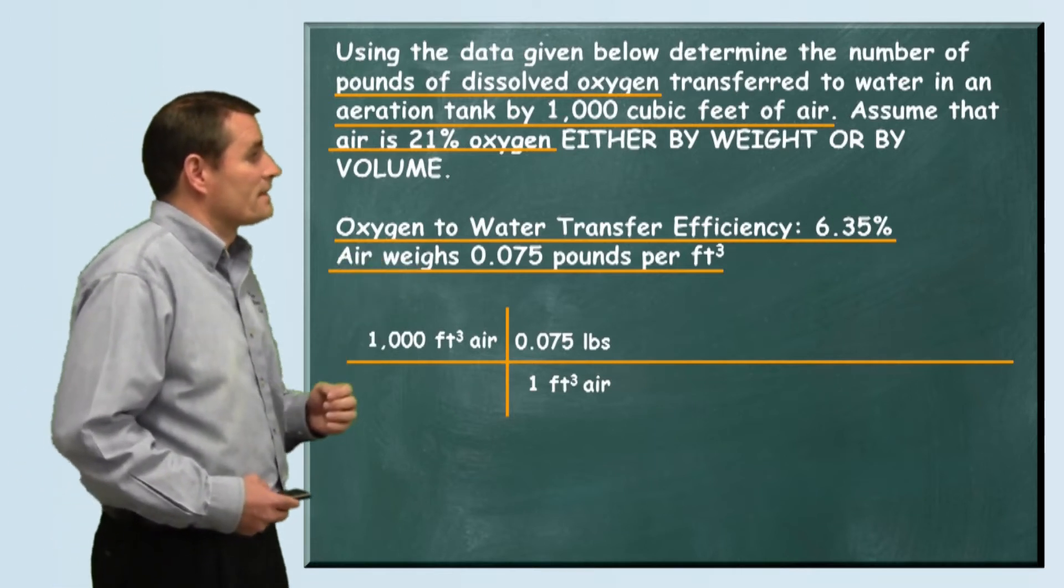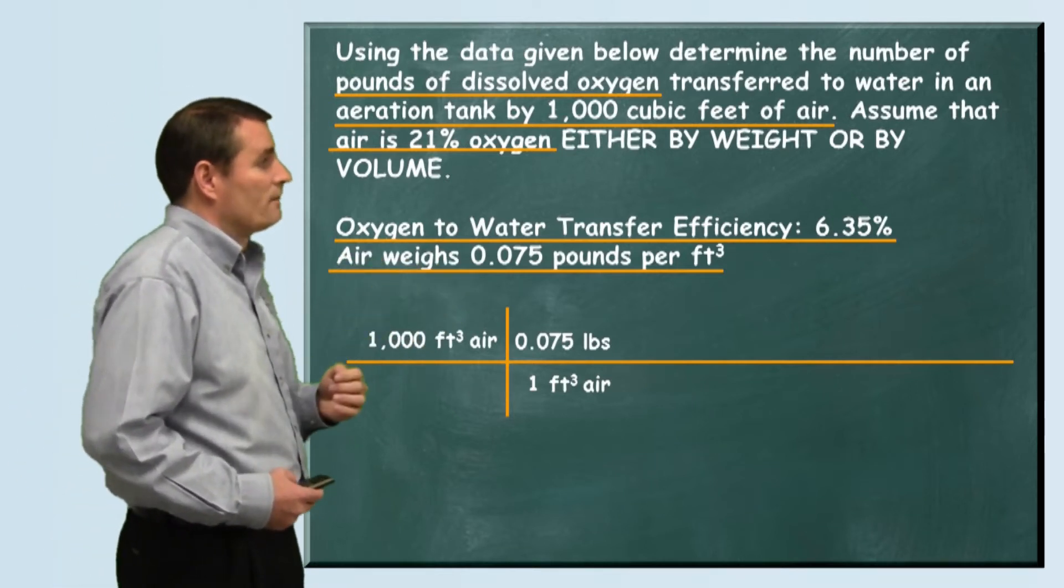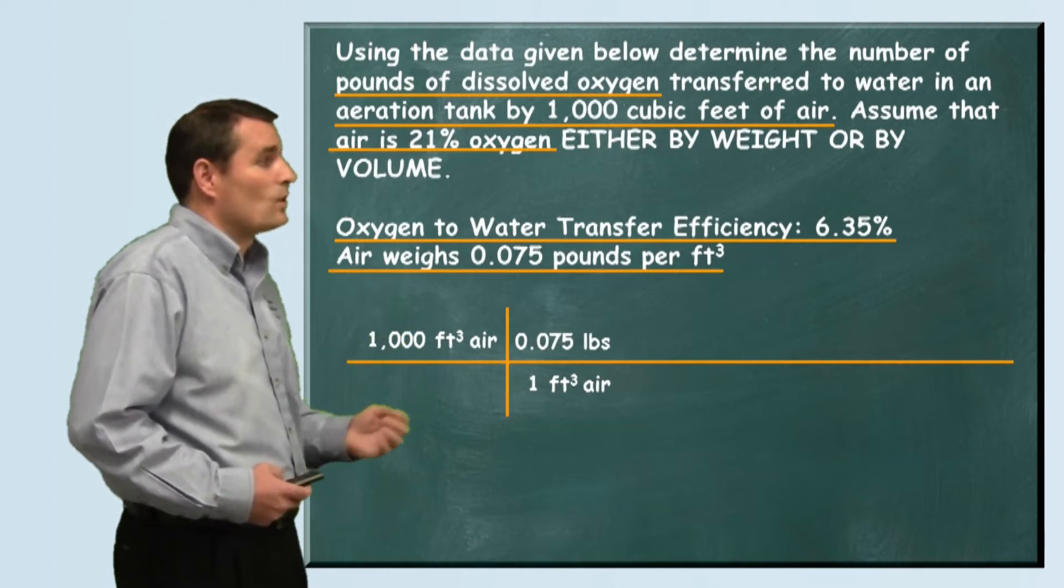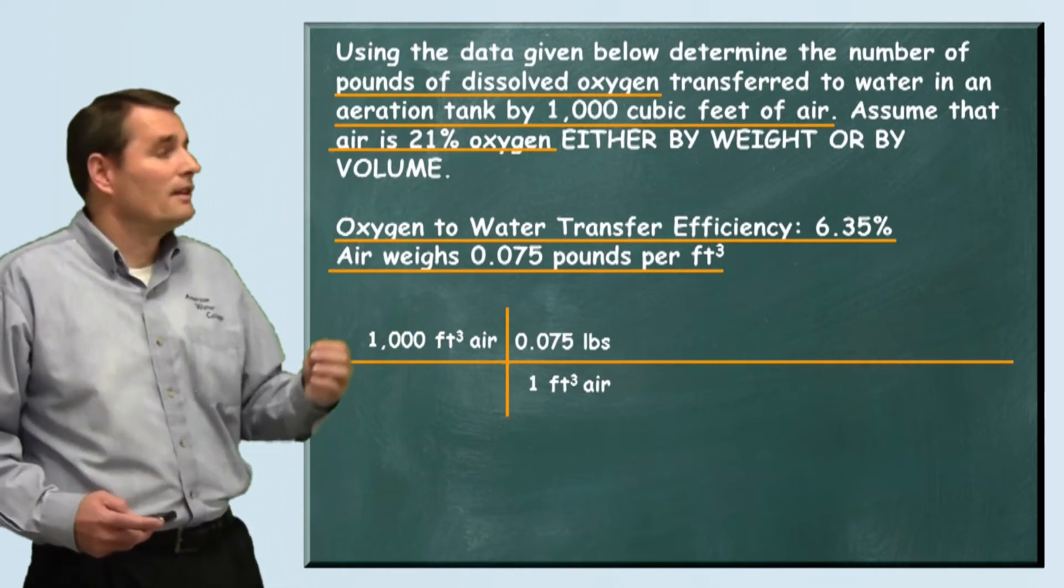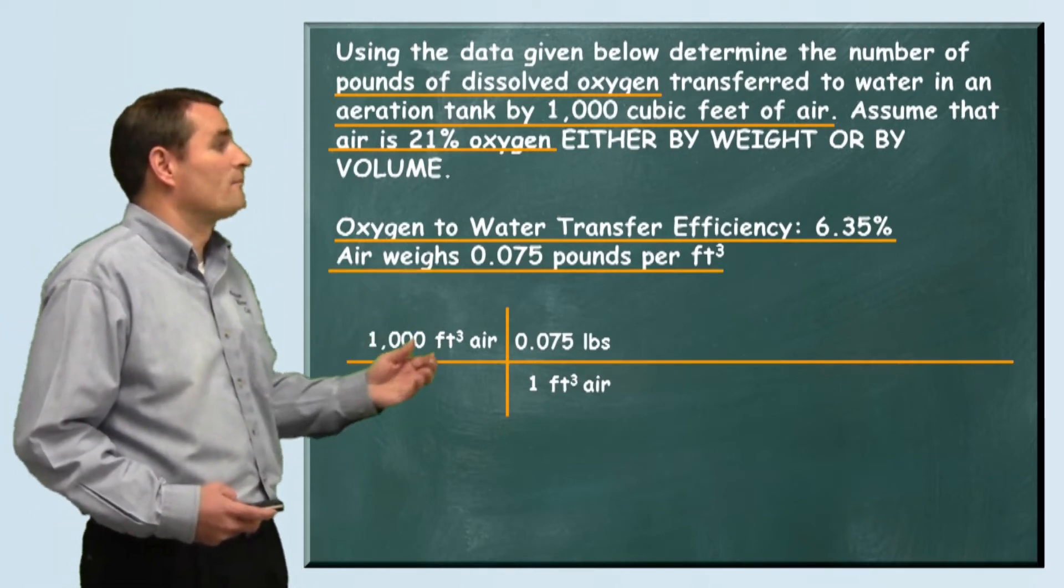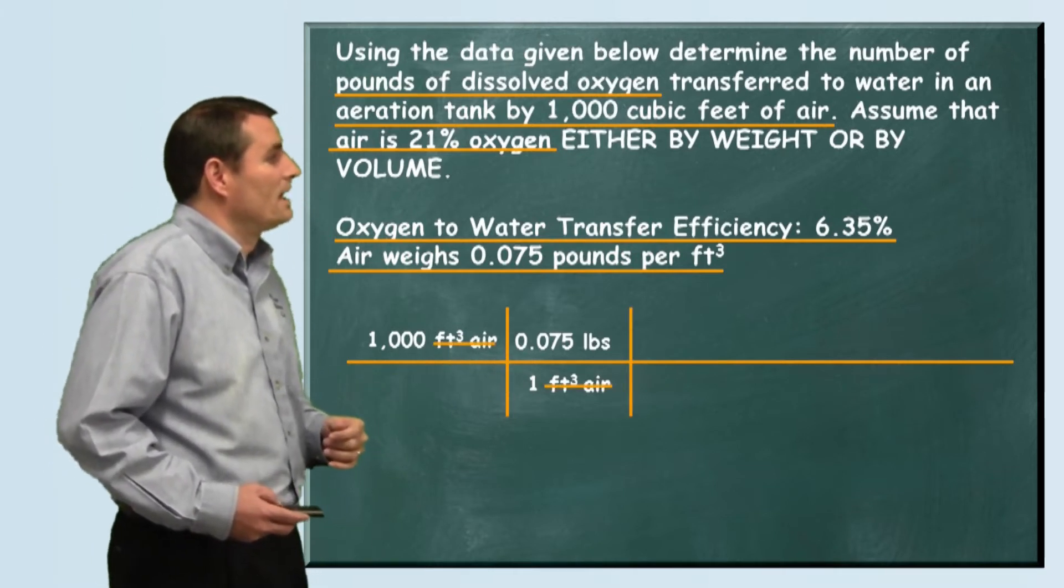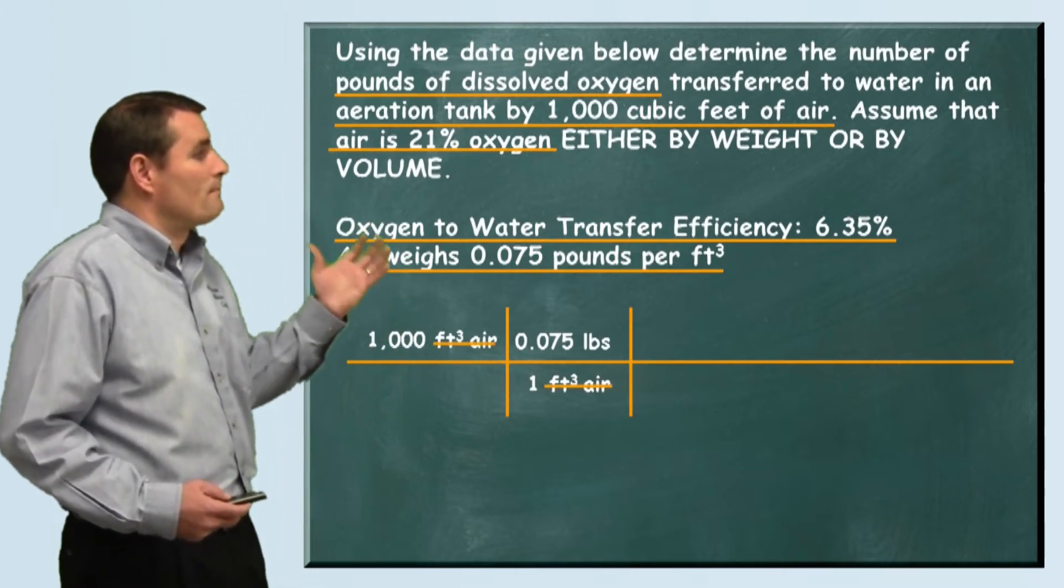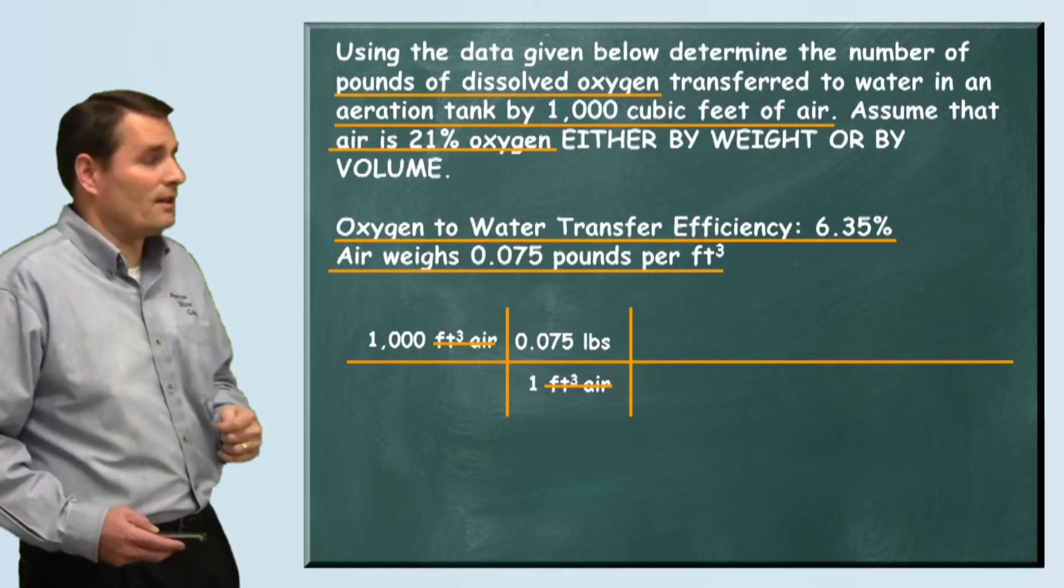From this 1,000 cubic feet of air, we use our conversion that they gave us that says 1 cubic foot of air weighs 0.075 pounds. So we write that down, and now we have total pounds that went to the aeration basin.